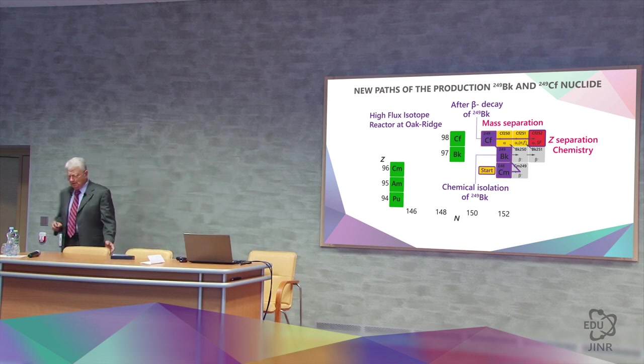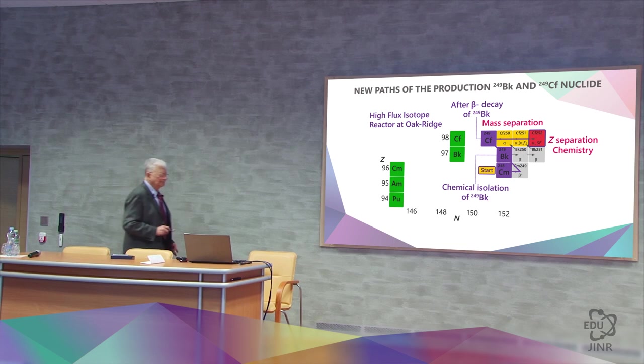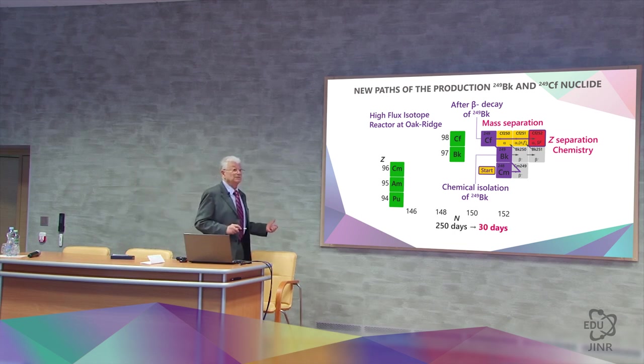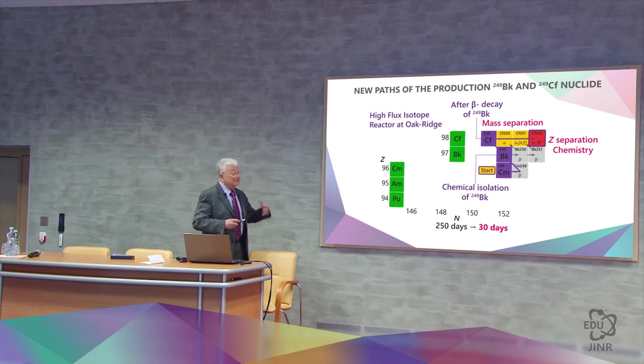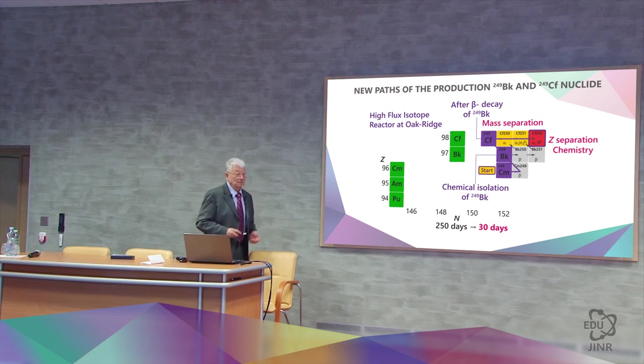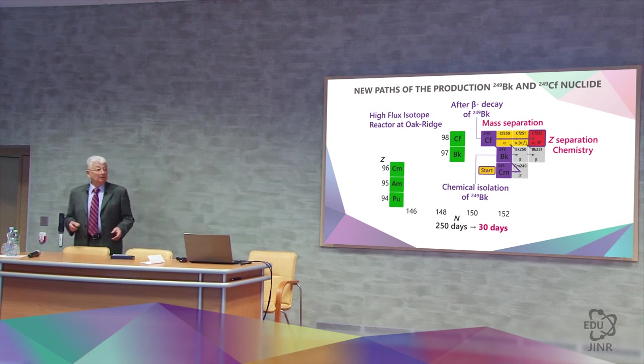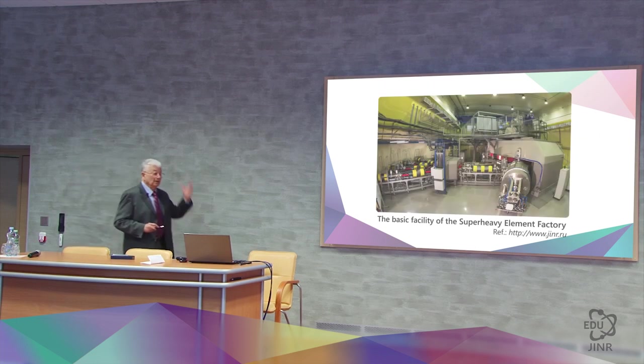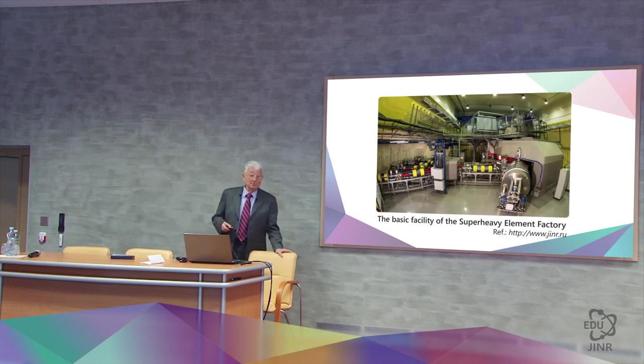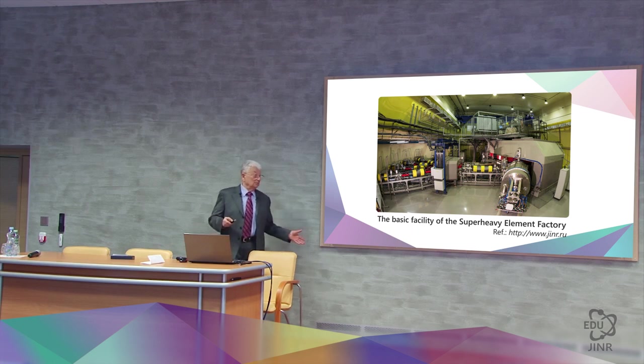This method was tried, and instead of 250 days, it took only 30 days. This method is very important, because in the not-too-distant future, when the factory of super-heavy elements will start operating, the issue of target production will become very important and urgent.